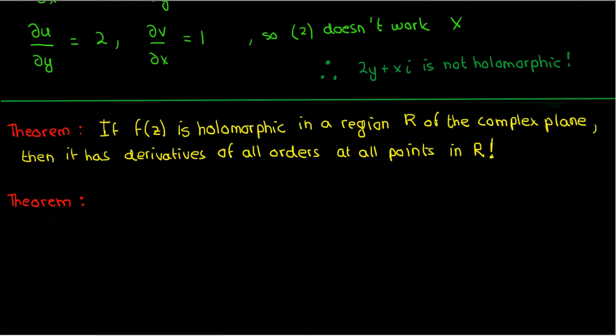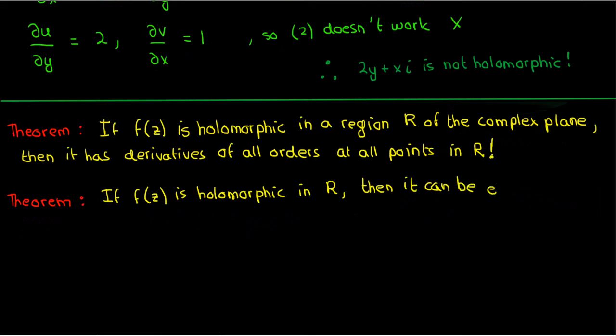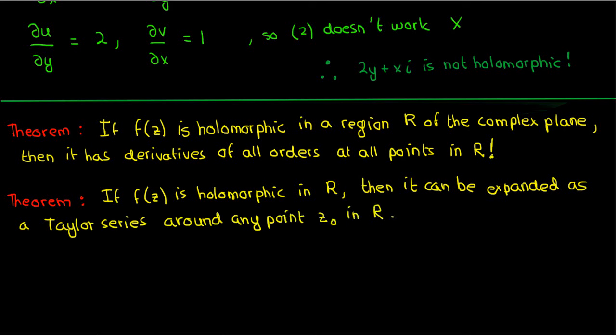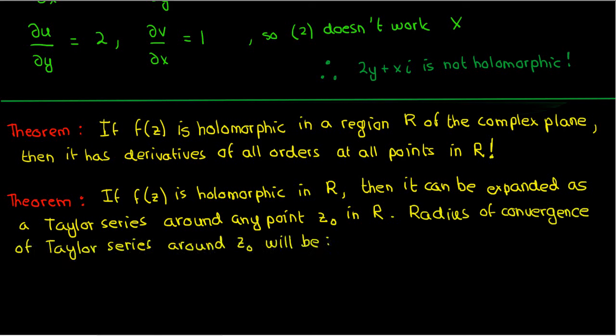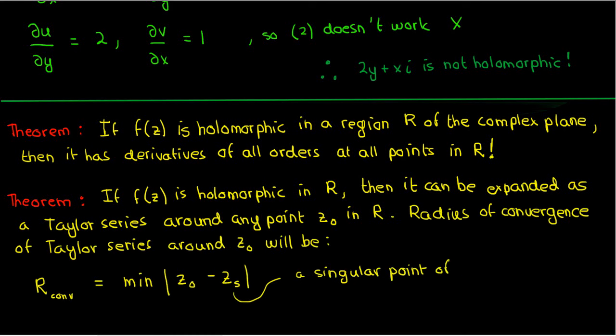Another theorem has to do with Taylor series expansions of complex functions. If I have a function that's holomorphic in R, then I can write that function as a Taylor series around any point in R. This is because if it's holomorphic, then from the previous theorem it's infinitely differentiable, which is why we can write a Taylor series for it — just as in real functions, you need infinite differentiability about the expansion point. The radius of convergence of that Taylor series will be the distance between z₀, the point you're expanding about, and the nearest singular point — a point where f is not complex differentiable.